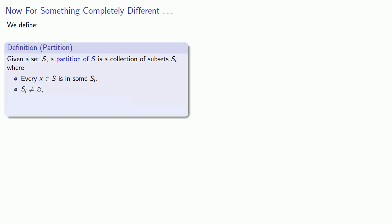None of the Si's are the empty set. And if I take two distinct subsets, in other words, Si not equal to Sj, then their intersection is the empty set.